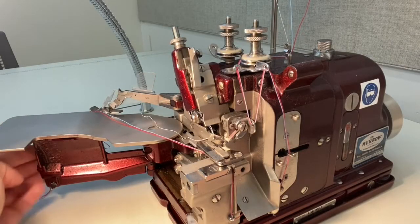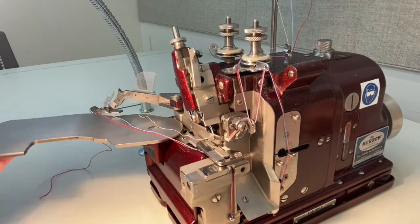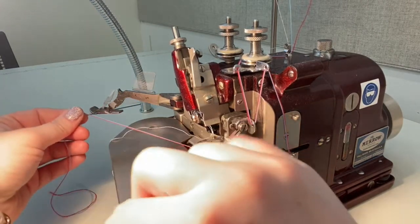Once the looper is threaded, pull your threads out towards the back of the machine. We can now close up the side door and top plate.